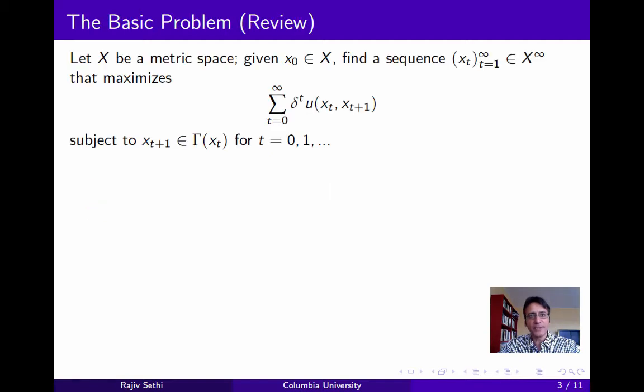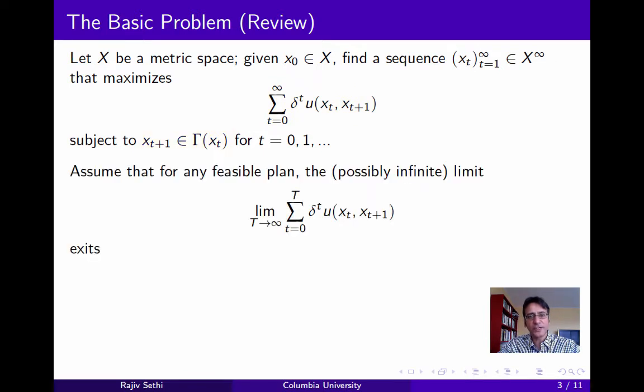Let's start by reviewing what we mean by a standard dynamic programming problem. Let x be a metric space, and let x0 be a point in x. The problem is one of finding a sequence of points xt that maximizes the objective function shown on the slide. Here delta is a discount factor, u is the one-period return function, and the transition from one point to the next in the sequence must satisfy the constraint correspondence gamma. Now assume that for any feasible plan, the limit shown on the slide exists, though we allow for the possibility that this might be infinite.